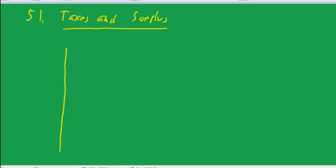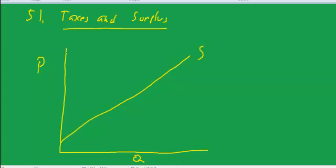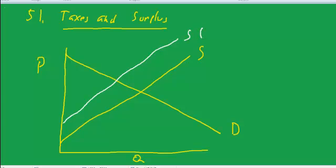So once again, let me have a nice big supply and demand diagram, because there's going to be a lot of points to label here. We'll put a supply curve up, we'll put a demand curve up, and then we'll put a tax in with a dashed line. So we add a tax onto the price, so this is the supply with a tax that raises the price.